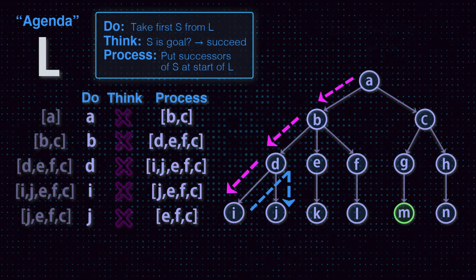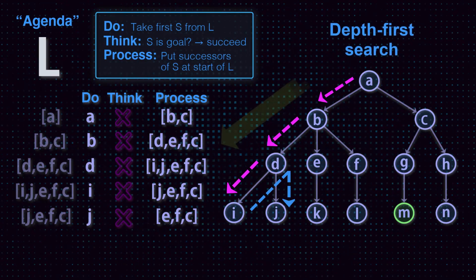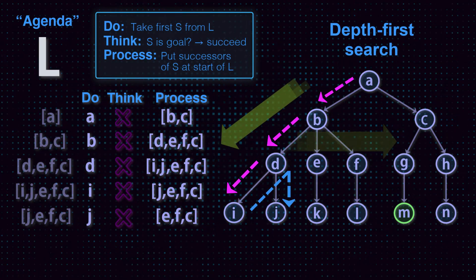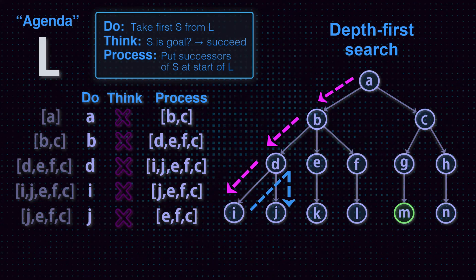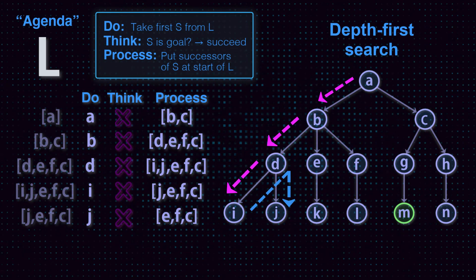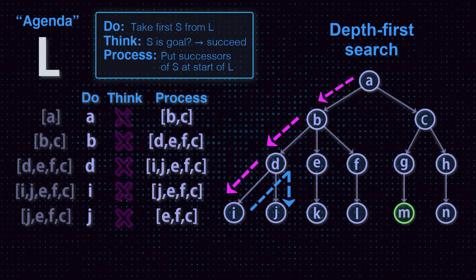The algorithm is called depth first because it always goes down before it goes to the right. If you continue the trace until it reaches node M, the search should visit 12 nodes with 4 backtracks.